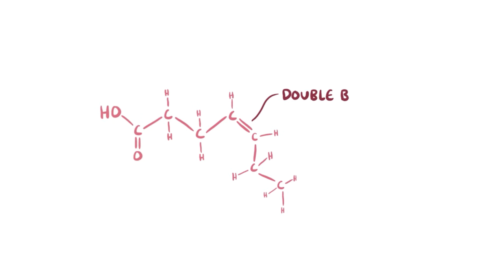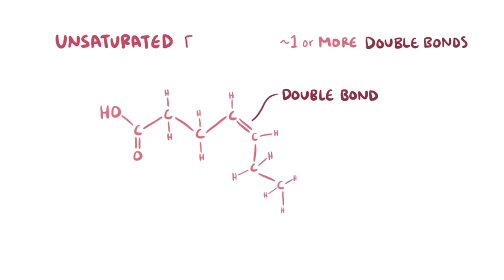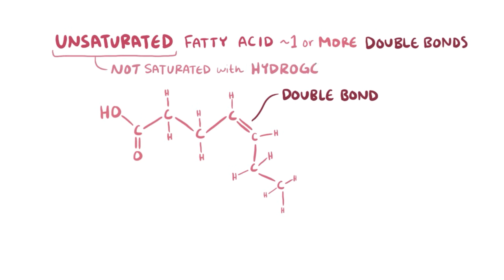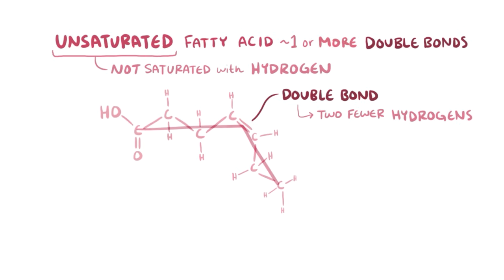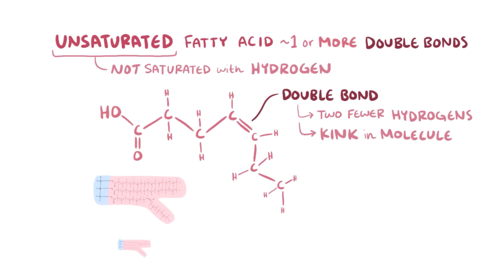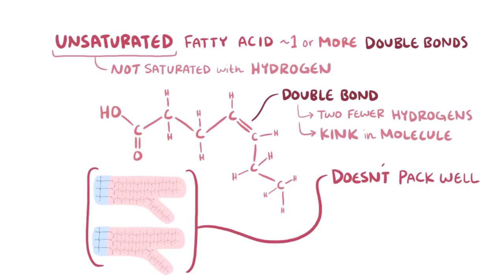Carbons can also have double bonds between them, and when a fatty acid has one or more double bonds, it's called an unsaturated fatty acid because it's not saturated with hydrogen atoms. For every double bond, there are two fewer hydrogen atoms. Also, a double bond causes a kink in the molecule, so the triglycerides don't pack together as nicely as saturated fats. As a result, unsaturated fats are usually liquid at room temperature.